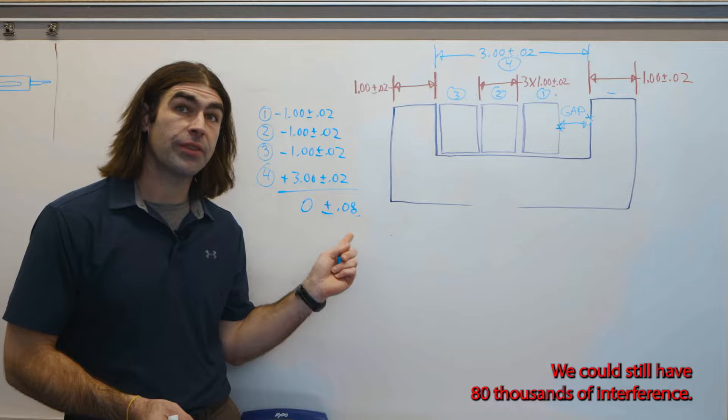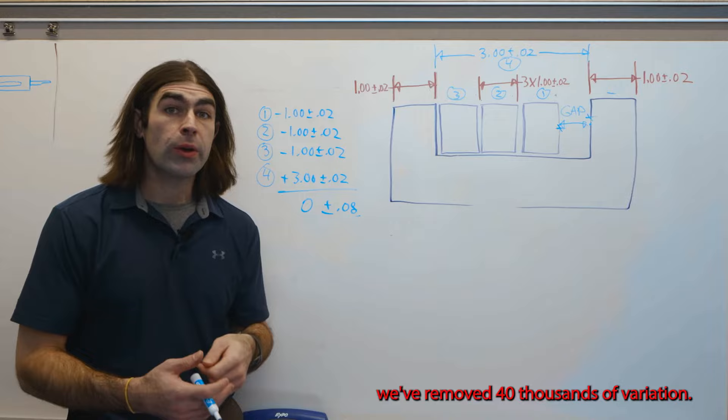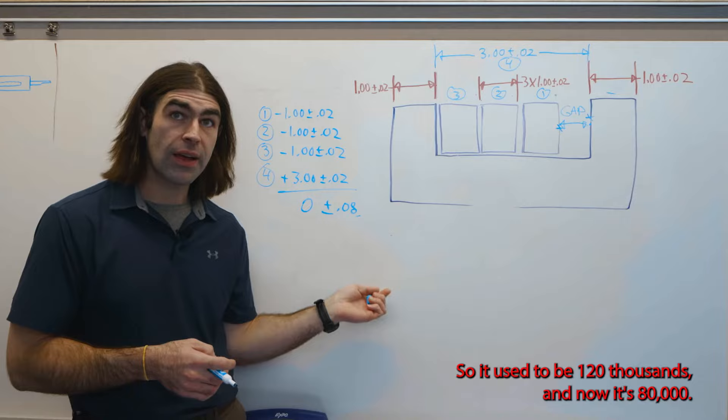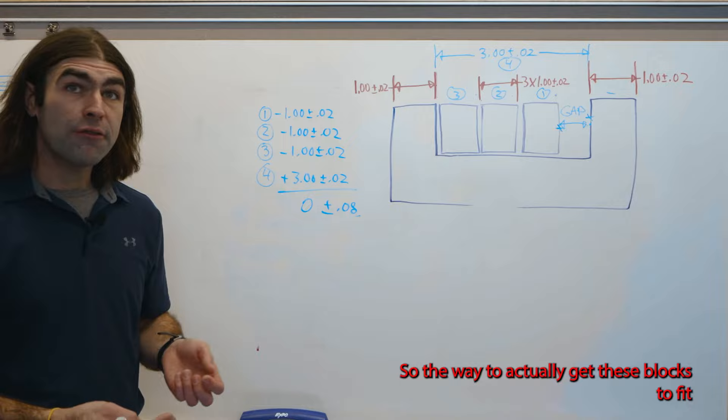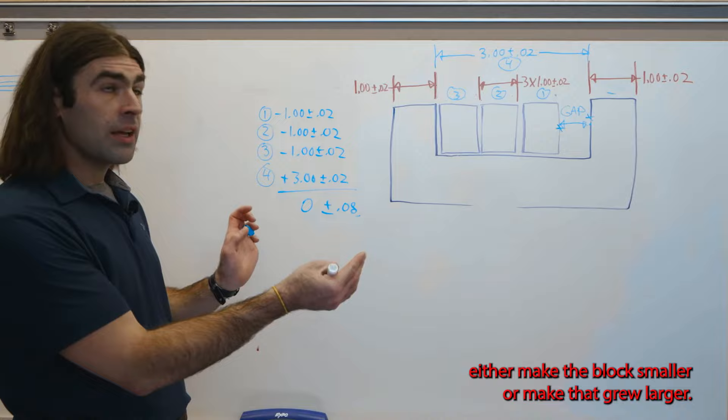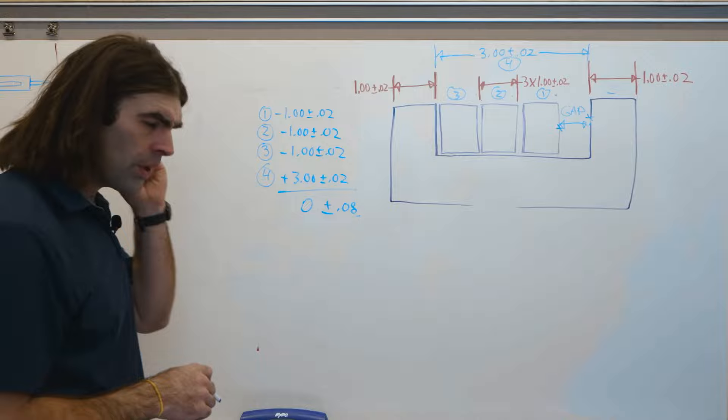It's still not going to meet the requirements. We could still have 80 thousandths of interference, but without changing any of the tolerances, we've removed 40 thousandths of variation. So it used to be 120 thousandths and now it's 80 thousandths just by changing how the dimensions are applied. So the way to actually get these blocks to fit would be to change the nominal dimensions. So we could pick either make the block smaller or make that groove larger.